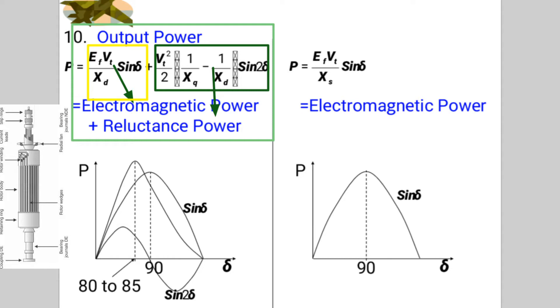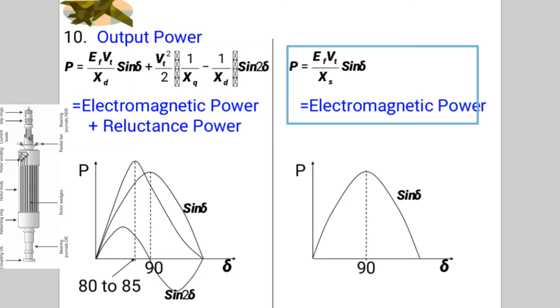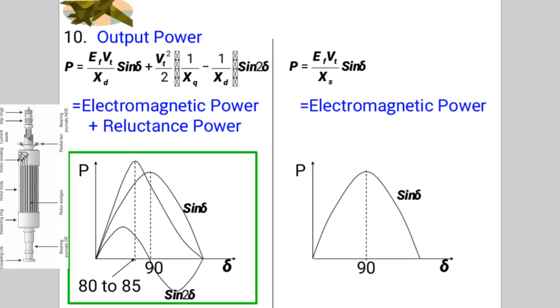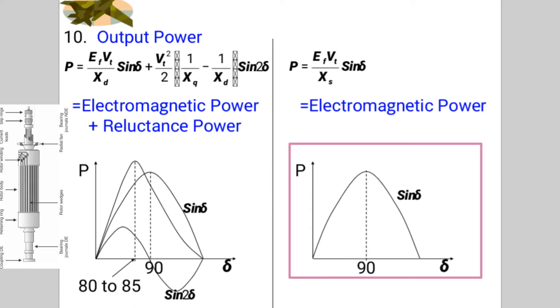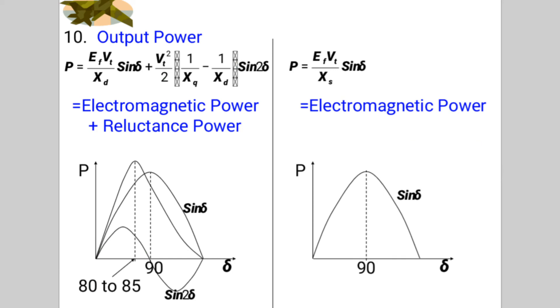Output power is the sum of electromagnetic power and reluctance power, while in cylindrical only EMF power. Here power angle sine delta is from 80 to 85 degrees. Here it is nearer to 88 to 89 degrees.